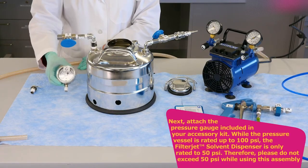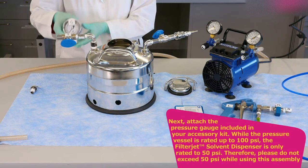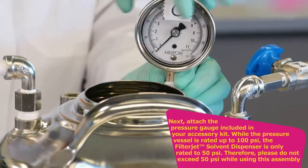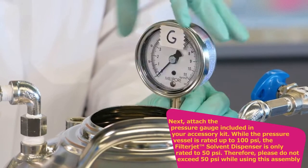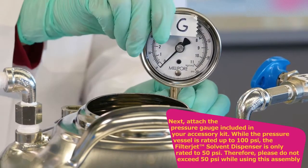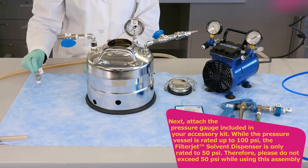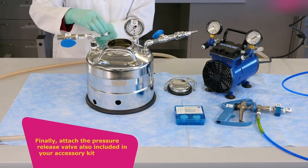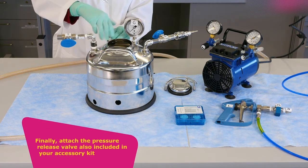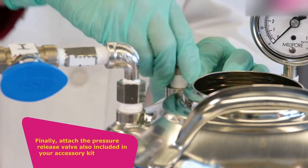Next, attach the pressure gauge included in your accessory kit. While the pressure vessel is rated up to 100 psi, the filter jet is only rated to 50 psi. Therefore, please do not exceed 50 psi while using this assembly. Finally, attach the pressure release valve also included in your accessory kit as shown previously.